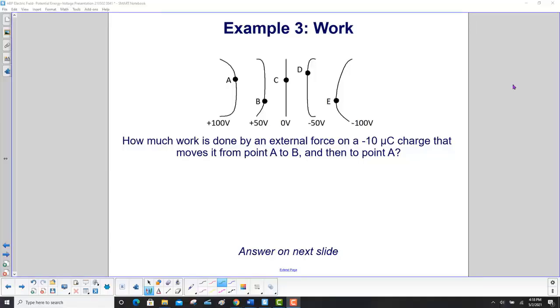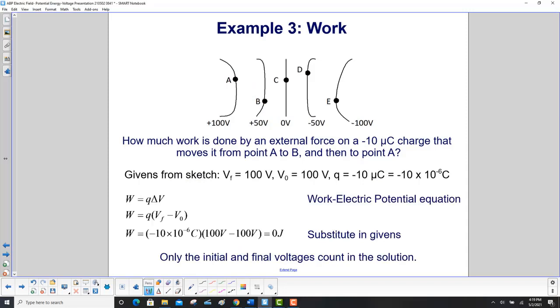How much work is done by an external force on a minus 10 microcoulomb charge that moves it from point A to point B and then back to point A? What's interesting is we don't care that we moved from B and then back to A again. We could have moved to D and back to A and gotten the same result. The electric field is a conservative one.